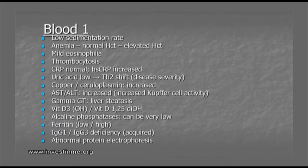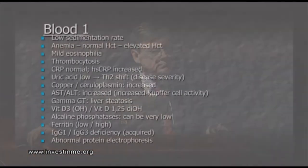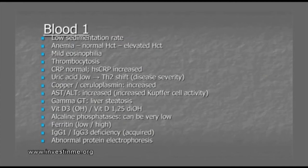We see either anemia due to chronic inflammatory syndrome, a normal hematocrit, or elevated hematocrit. Patients who also have obstructive apneas or central apneas get an elevated hematocrit, which doesn't help them if they also have a low blood volume. A lot of patients have mild eosinophilia — eosinophils are also macrophages involved in infections. A lot of patients have thrombocytosis, a mild thrombocytosis, or platelet activation, which doesn't help the circulation.